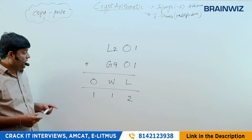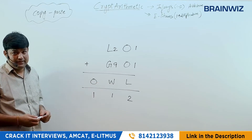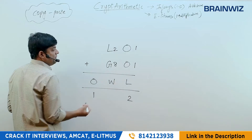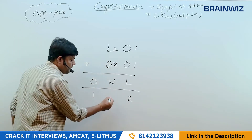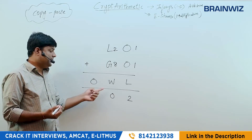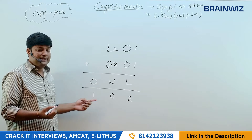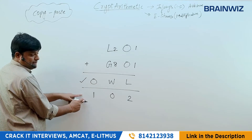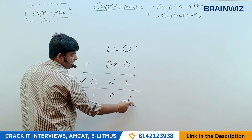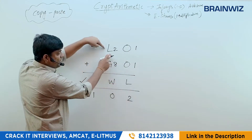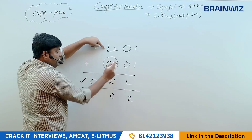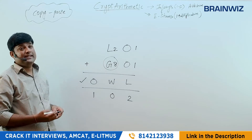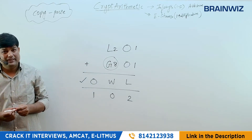Since W can't be 1 (O is already 1), the only option is G=8. Then 8+2=10, so W=0. O is 1 and W is 0 — they are different values and it's perfectly satisfied. So G=8, W=0. This teaches you to use the carry constraint and copy-paste values to solve cryptarithmetic step by step.